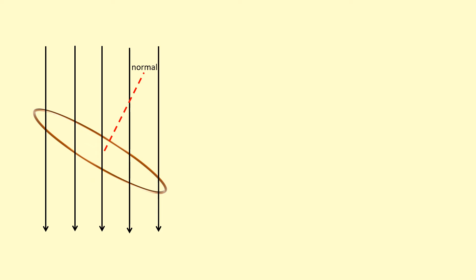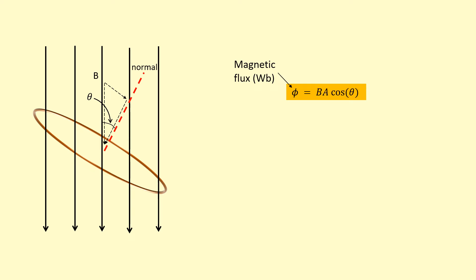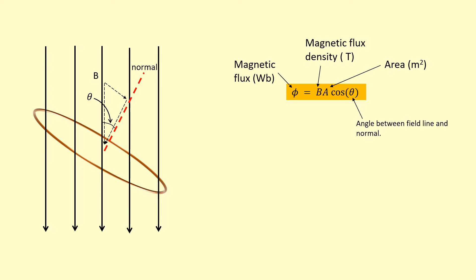There's an equation to calculate magnetic flux. We draw a normal to the coil, and the angle we'll be using is the angle between the magnetic field — going downwards in this case — and the normal. The magnetic flux density is represented by B. We're only interested in the component going perpendicular through the area of the coil — the part shaded in green — so we use cosine. Magnetic flux Φ, measured in Webers, equals the magnetic flux density B in Teslas, times the area in metres squared — pi r squared for a circle — times cosine θ, where θ is the angle between the field line and the normal.